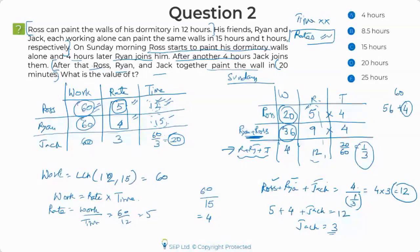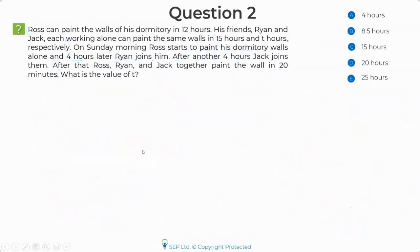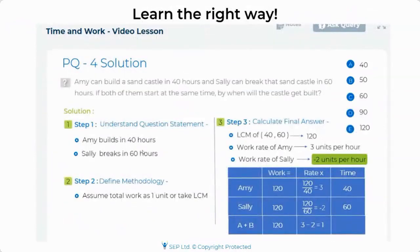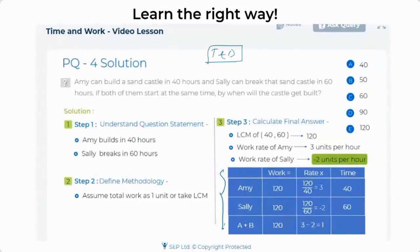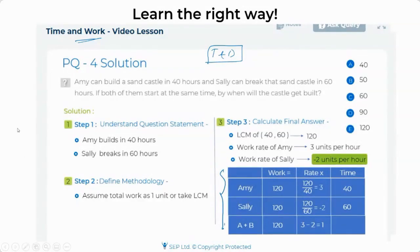Let's move on to the next question. This is an interesting one where I'm going to show you that random number plugging won't work. For those who are students, try to learn both methods. In the video lesson, we've taught you to solve questions using the WRT table for both time and work and time and distance. If you're struggling with word problem questions, I highly recommend looking at the time and work video lesson — it covers all cases and compares the unit work and LCM methods.